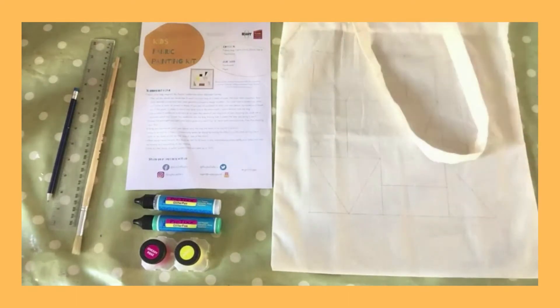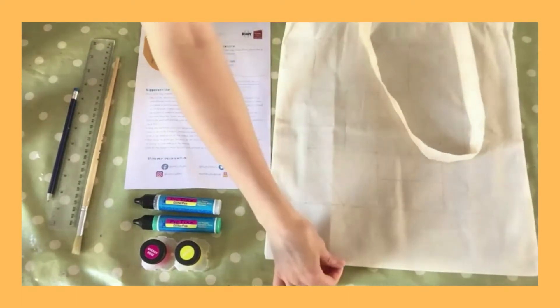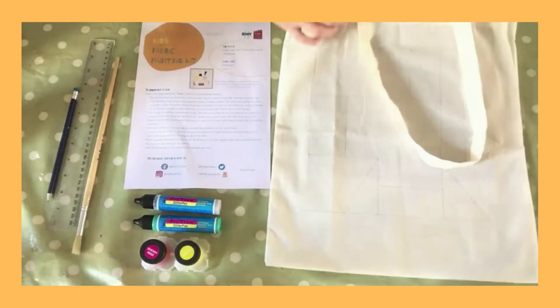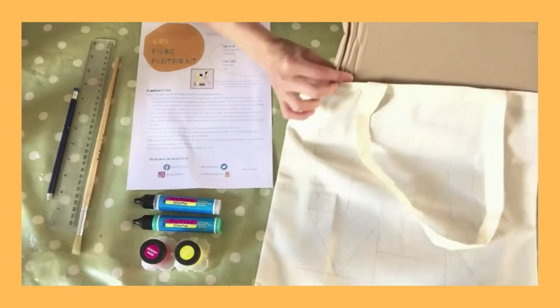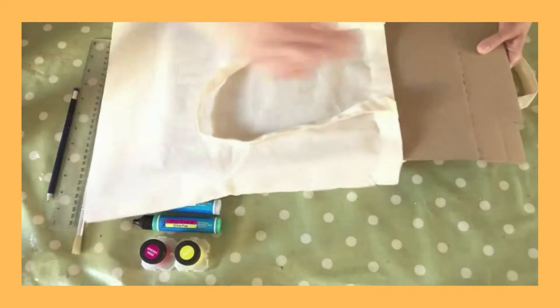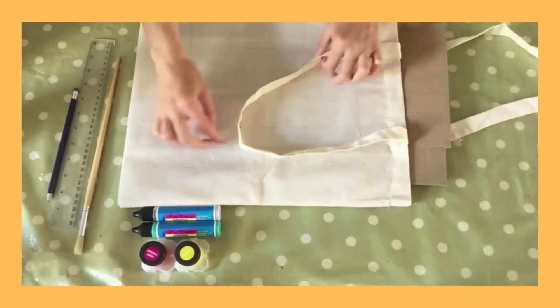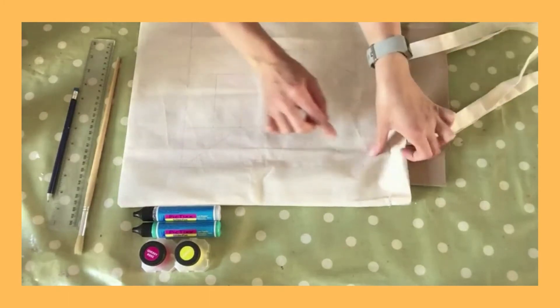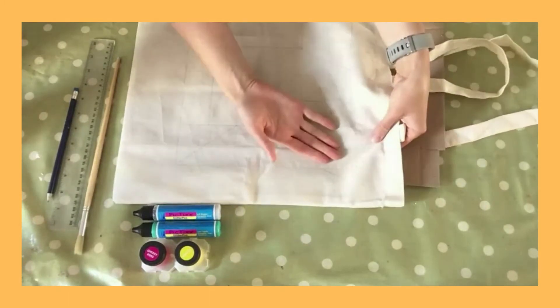And the next step that you need is you need to find a piece of cardboard, so have a look through your recycling, see if you can find a piece of cardboard that you just want to insert into the bag as we're going to be using the fabric paint and we don't want that to seep through and stick the bag together.